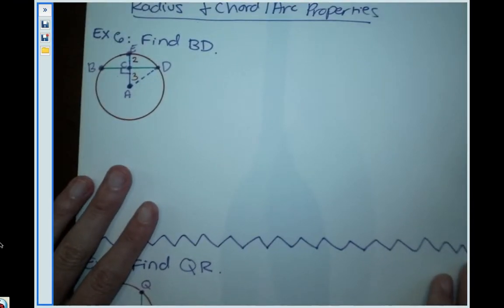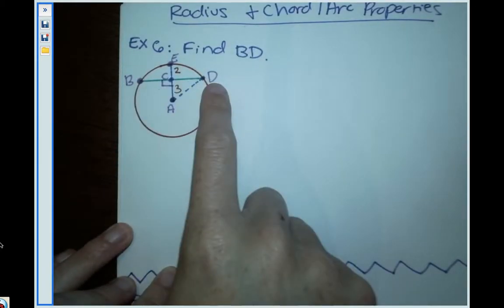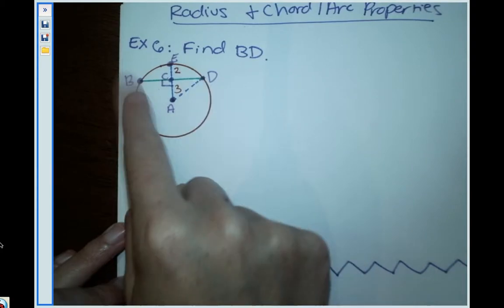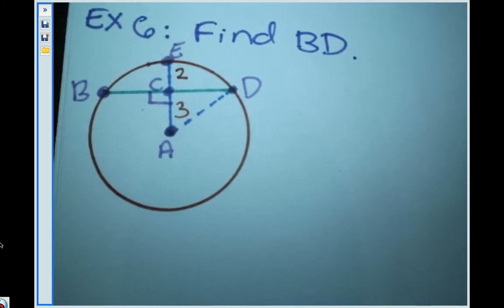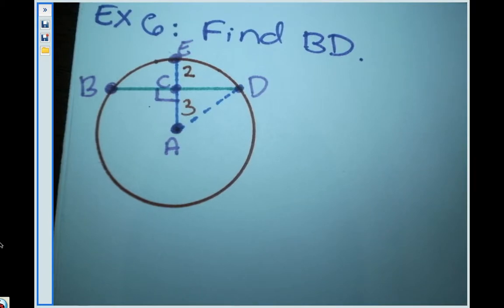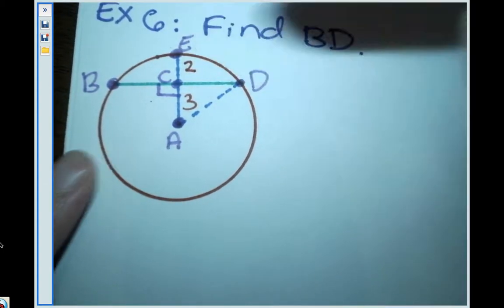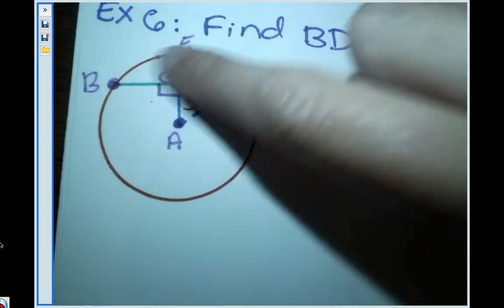Let's look at Example 6. We need to find the length of segment BD. Looking at the picture, BD starts and ends on the circle and does not pass through the center, so it is a chord. Zooming in, I spot radius AE — it starts at center A and extends to the circle at point E. That's our radius.